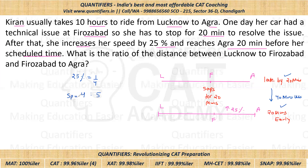When distance is constant, the ratio of times is the reciprocal of the ratio of speeds. So since the speed ratio is 4:5, the ratio of time is 5 is to 4.